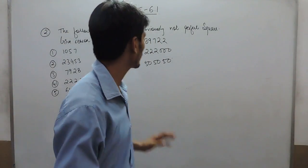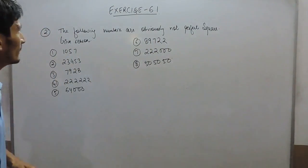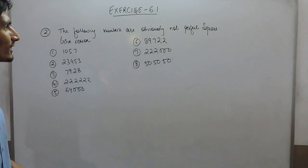Hello everyone, in this video we are going to solve question number 2. The following numbers are obviously not perfect squares. Give reasons.